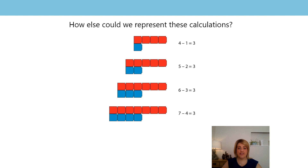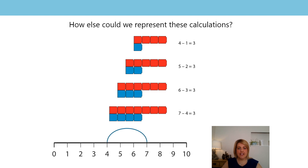We know you know the answers to these easy calculations and we can do these straight away because we understand maths so well. But we need to be able to see the maths and understand the structure so that when we end up dealing with bigger numbers or more complicated calculations we can still feel as confident. How else could we represent these calculations? Think about the work you completed with Mr Whitehead. A number line would be a good way.